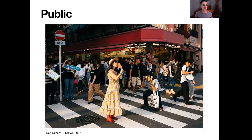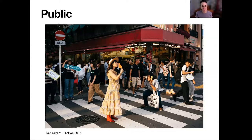Street photography is public — we are in a public space, whether you live in a densely populated city, a sparsely populated village, or a suburban environment. There are things happening everywhere. I love this photo because I love taking pictures of people taking pictures — I think it's really compelling.